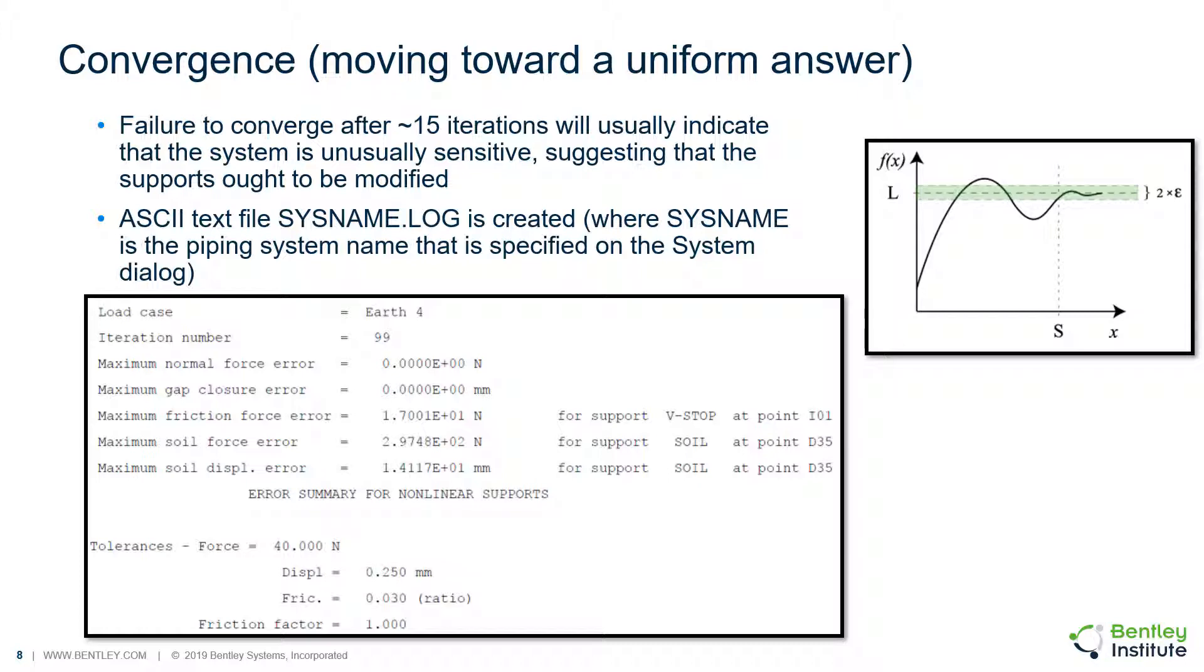Opening the system name log file that was created and scroll down to the error summary for nonlinear supports. Just above this line, you can see detailed information for why your model did not converge. You will see the load case causing the problem, the values calculated and compare those to the tolerance settings, and the node point where the non-convergence occurred.